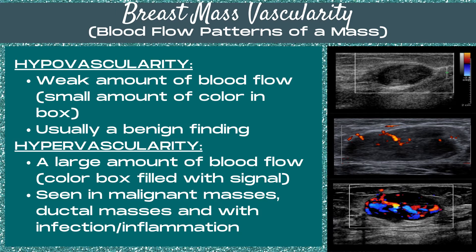Then there's hypervascularity. This is where there's a large amount of blood flow and the color box is filled with color Doppler signal. Hypervascularity is seen in malignant masses, ductal masses, and also with infection or inflammation in the breast.